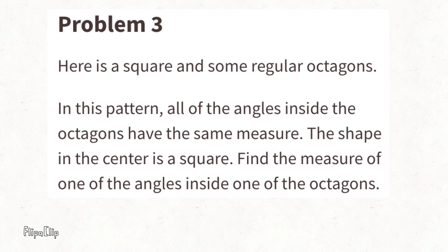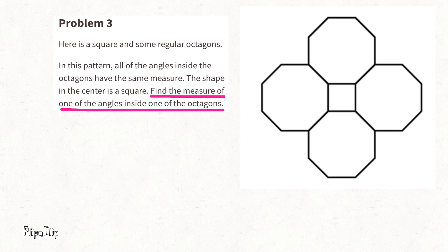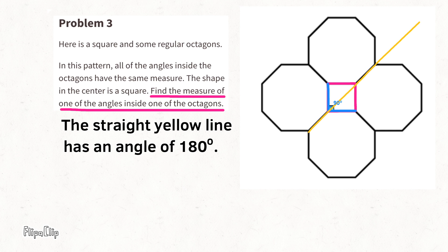Problem 3: Here is a square and some regular octagons. In this pattern, all angles inside the octagons have the same measure, and the shape in the center is a square. Find the measure of one angle inside one of the octagons. The pattern includes four octagons; squares have four right angles. A highlighted right angle measures 90 degrees, and a straight angle measures 180 degrees.